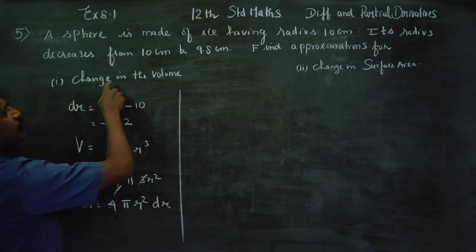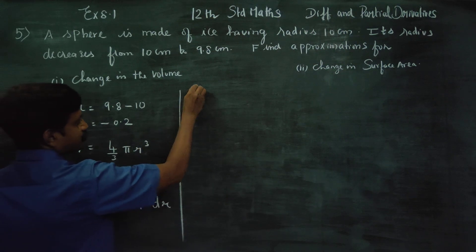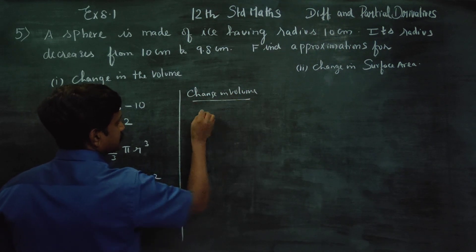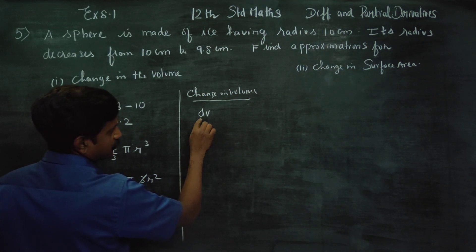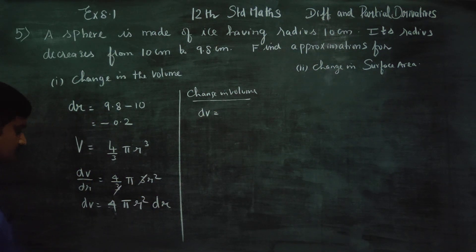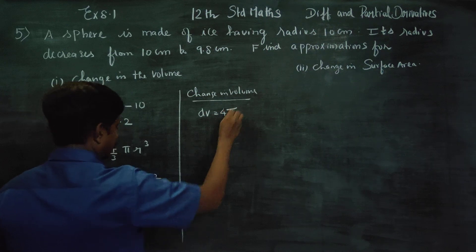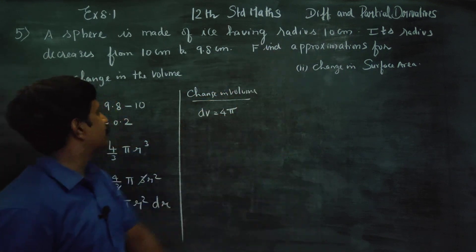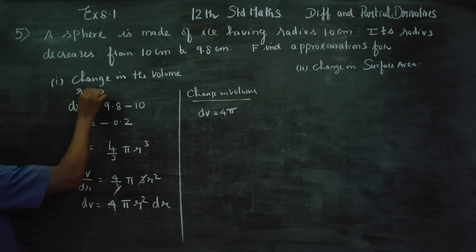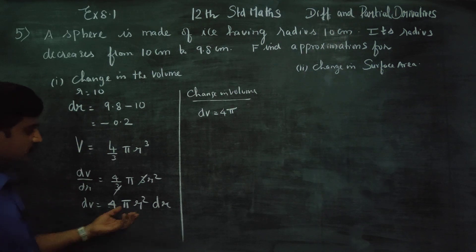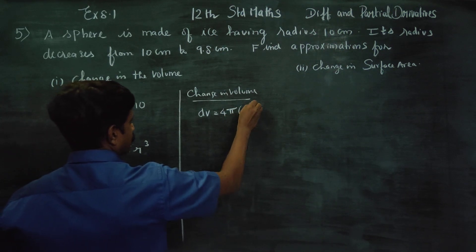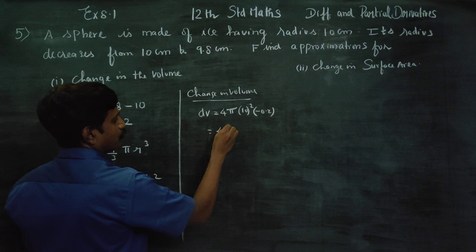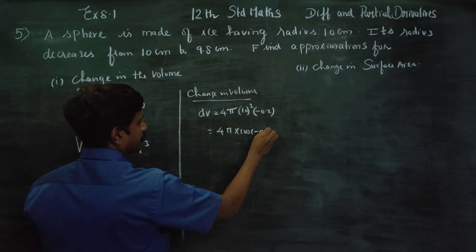Now, change in volume is referred to as dV. dV is the small difference in volume, or change in volume. It equals 4π r² dr, where the original r is 10. So dV equals 4π into 10² into dr, which is 4π into 100 into minus 0.2.